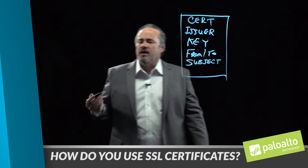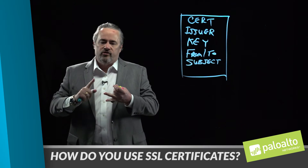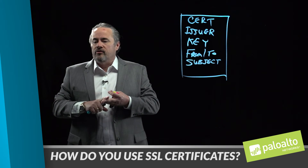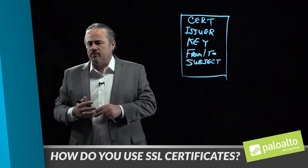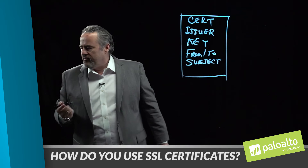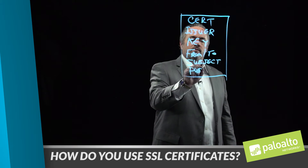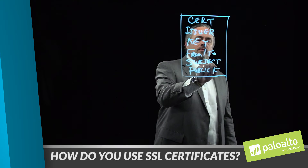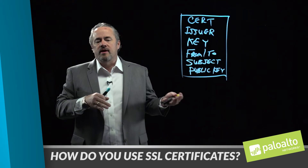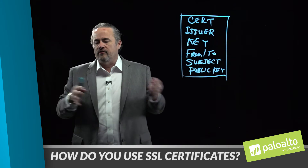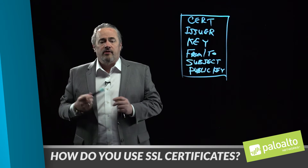The next piece of information is about the subject — who the certificate was issued to, what server it goes on, and what the certificate can be used for. In our case, that's identity and encryption/decryption. Then the next piece of information is a public key, which is going to be used during the transfer of information during the SSL setup.